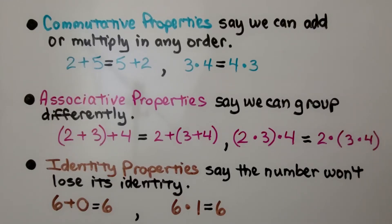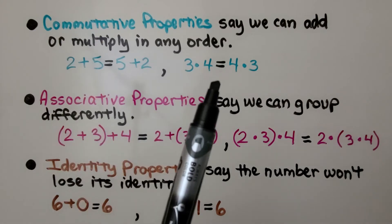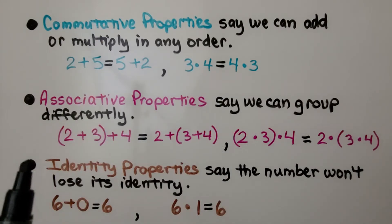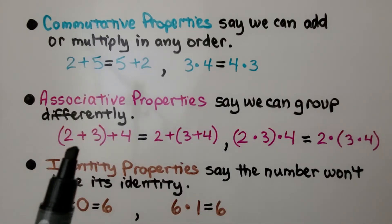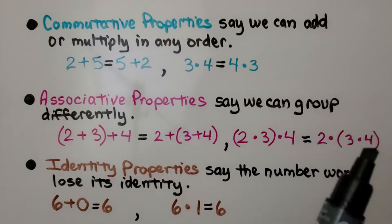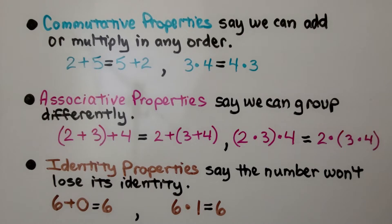So for a quick review, the commutative properties say we can add or multiply in any order. The associative properties say we can group differently. We'll get the same answer. Identity properties say the number won't lose its identity. For addition, if we add zero, we're still going to have the same number. If we multiply by one, we're still going to have the same number. They're still going to have the same identity.